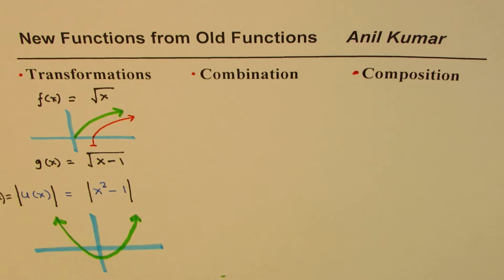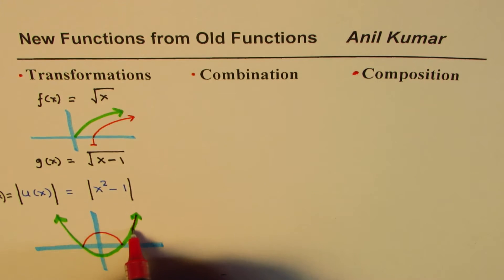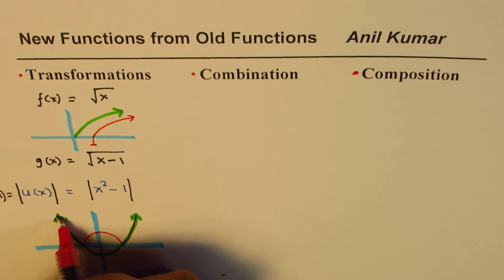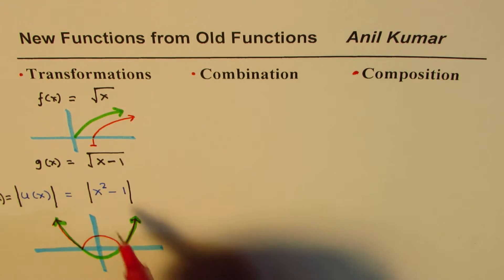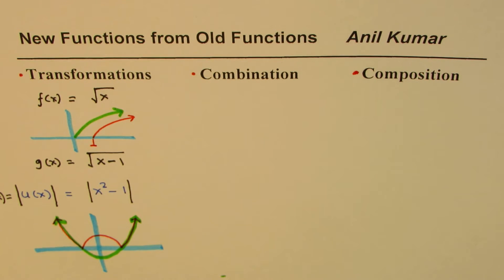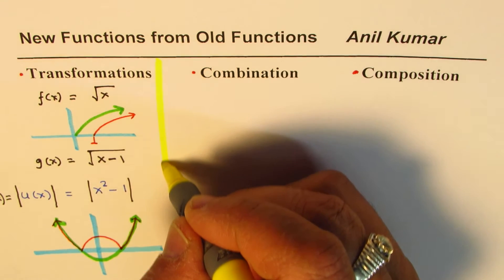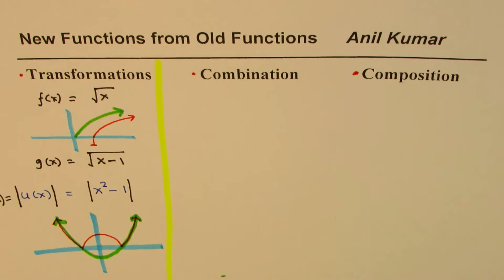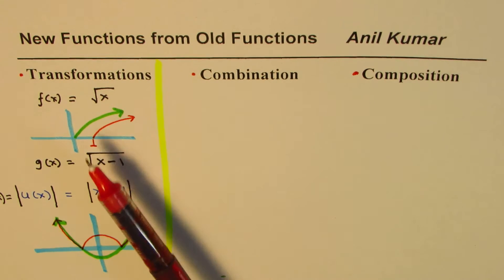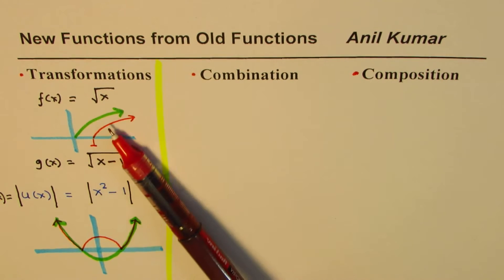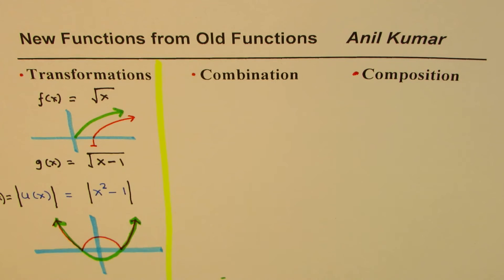Absolute value transformation changes the function drastically — absolute value means always positive, so the negative portion flips up to become positive. The function you have now looks like this. That is how we get a new function by transforming the old one. Transformations include vertical and horizontal stretches and compressions, reflections on the x and y axes, and the absolute value transformation as well.